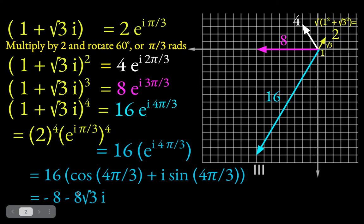And so here is our a plus bi form of the final answer. So you can see we go over 8 units, and we go down along the imaginary, negative imaginary axis, 8 root 3 units. So that's one way to raise this thing to the fourth power.